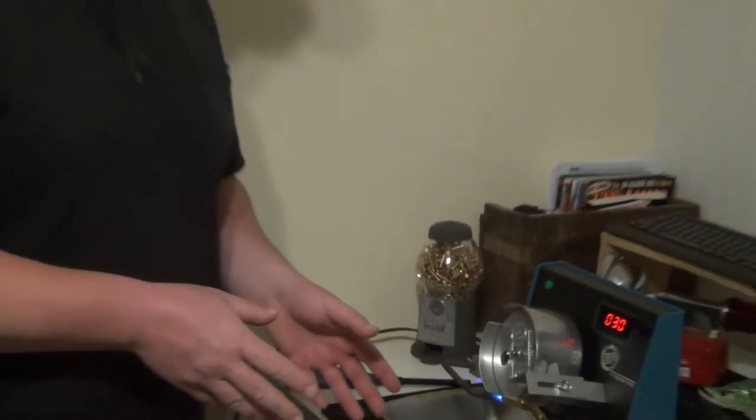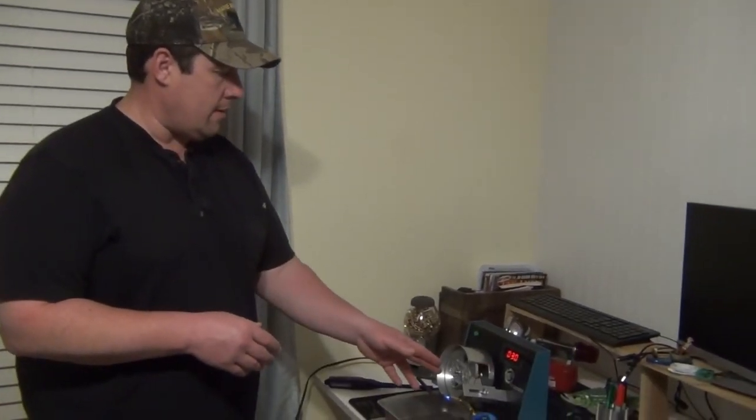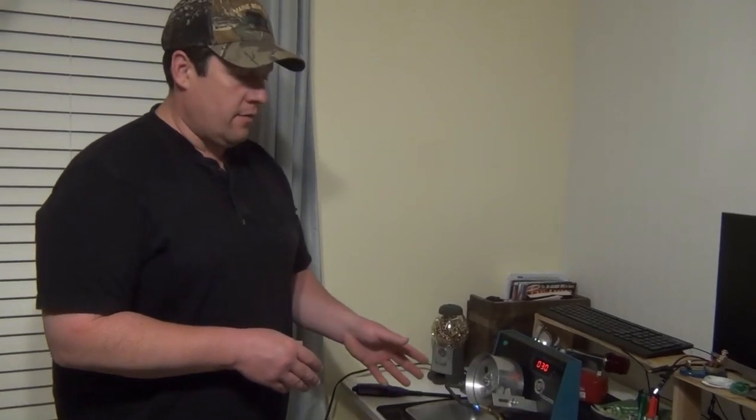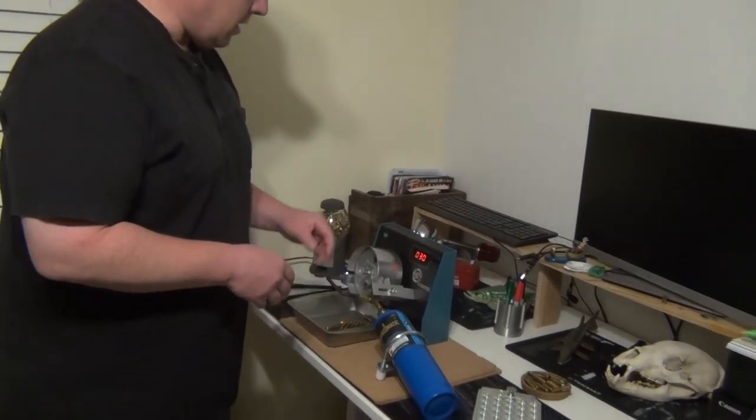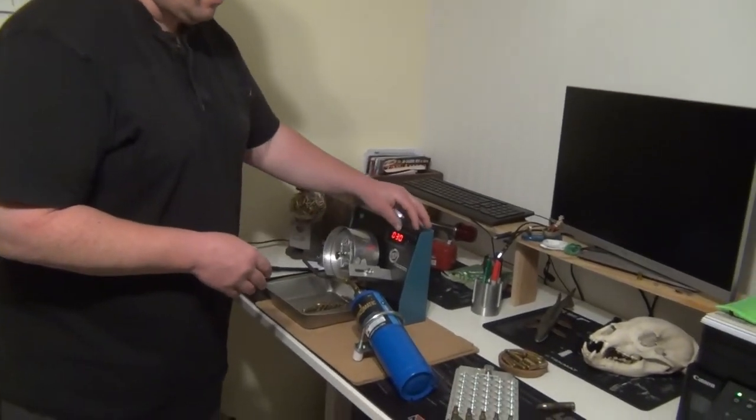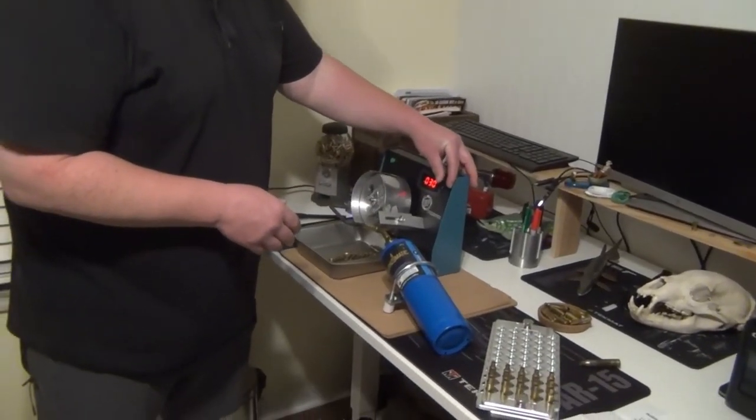So, we did the 15-223. There's no feed tray for this. You just load them up one at a time. You load one while the other one's going. Really it doesn't take very long. For just doing rifle rounds, I think it's fine. It would be nice to have a feed tray, but it doesn't take much longer to do it this way.